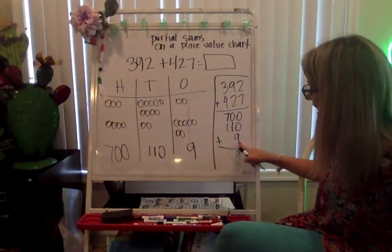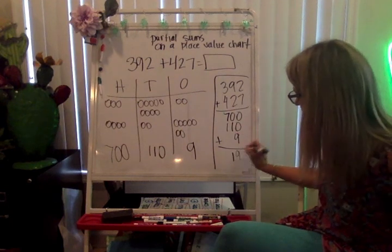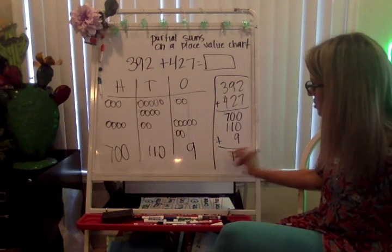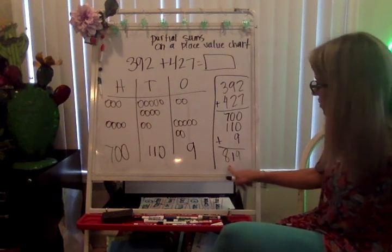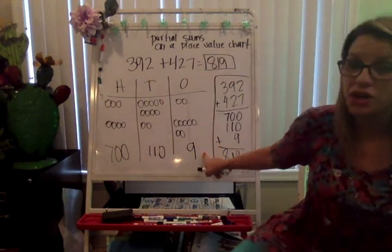So, 0 plus 0 is 0, plus the 9 is 9, 0 tens plus 110 is 110, 700 plus 100 is 800. So, the sum is 819. So, on your work, you're going to have some problems where you're going to have to solve them just like this.